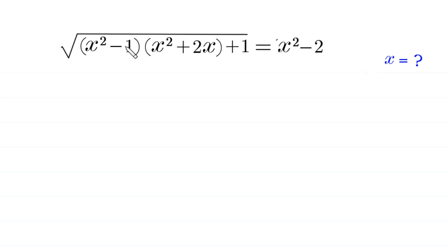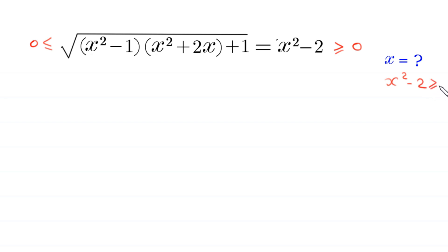Since this expression is under a square root, it must be greater than or equal to 0. Also, x squared minus 2 must be greater than or equal to 0. Moving negative 2 to the right hand side, x squared must be greater than or equal to 2. This is the domain we'll use to check the solutions.